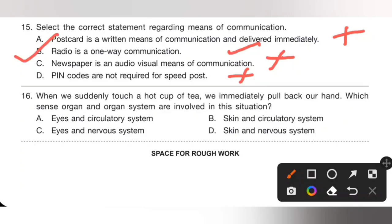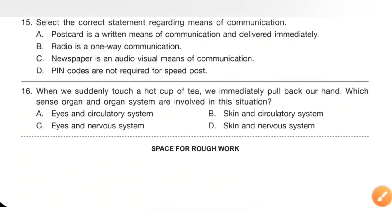Question 16: When we suddenly touch a hot cup of tea, we immediately pull back our hand. Which sense organ and organ system are involved? Option A — eyes and circulatory — no. Option B — skin and circulatory — no. Option C — eyes and nervous system — no. Option D — skin and nervous system — is the correct answer. Skin and nervous system are involved in this situation.